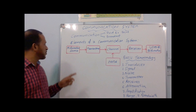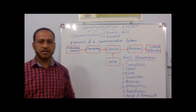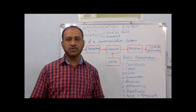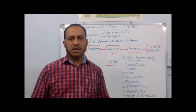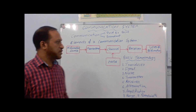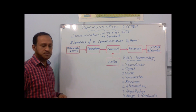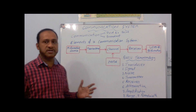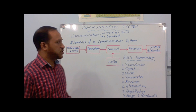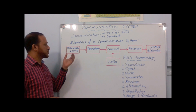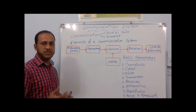In communication, an information source means it can be a sound signal or it can be a visual — the sound produced in a program, or the light reflected from a program. So the information source means a sound signal or a visual.